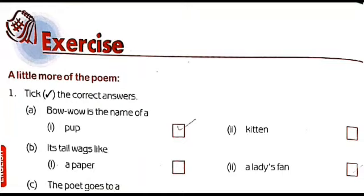Welcome back to the English e-learning platform. Dear students, in the previous class we learnt the first poem, 'A Moving Tail.' In this poem, the poet Edward Oxenford is going to find out the mystery of the dog's tail. Today, let us discuss this poem's exercise. All of you open page number 14 from your textbook.